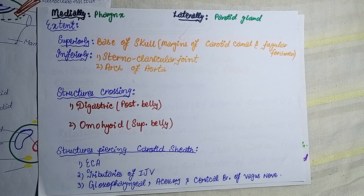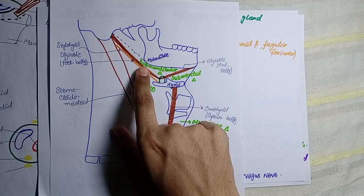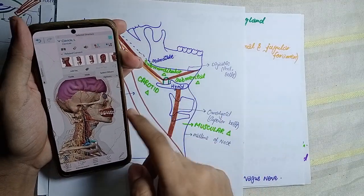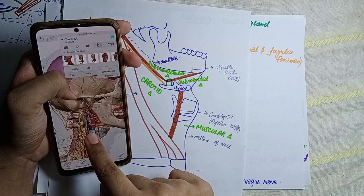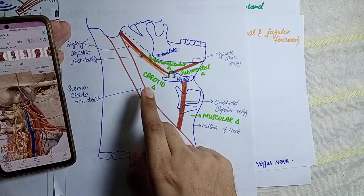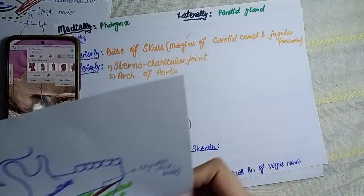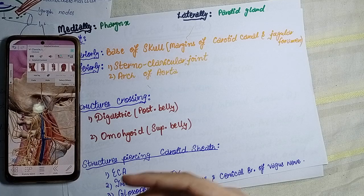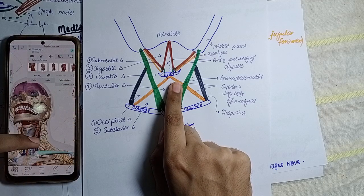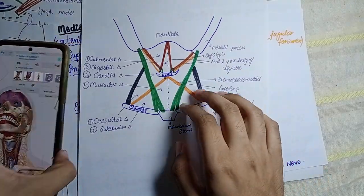We can see the anterior triangle of the neck. Within this region, we have the common carotid artery with the internal jugular vein. The posterior belly of the digastric muscle crosses over this region in the upper part of the anterior triangle, passing across the upper portion of the carotid sheath contents.